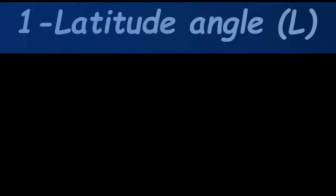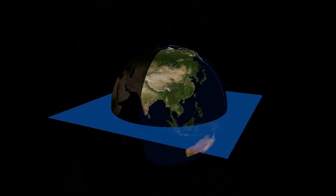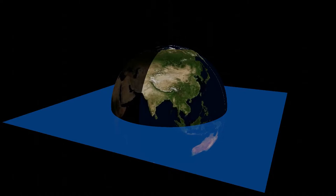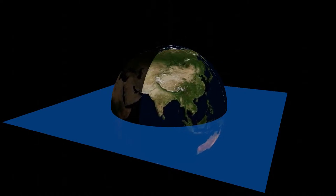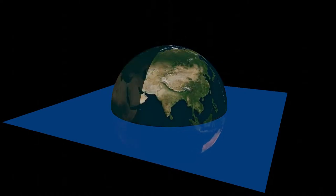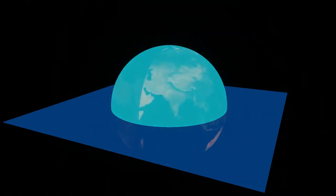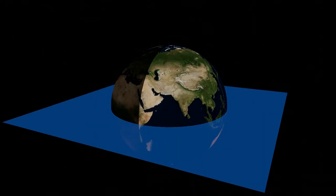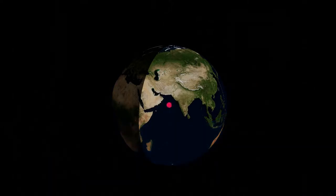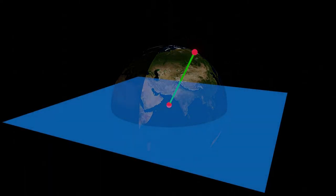First, the latitude angle. If this is the Earth and this is what we call the equatorial plane — a plane that splits Earth into two sections, the northern hemisphere and the southern hemisphere — if you join the center of the Earth to your position on the Earth's surface, you get a line. The angle between this line and the equatorial plane is what we call the latitude angle, and it takes the symbol L.